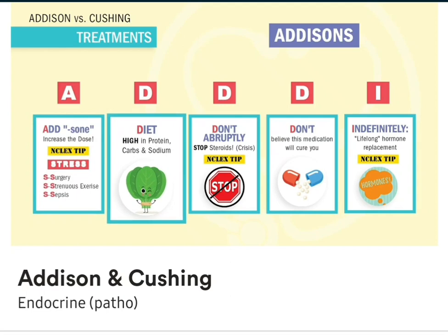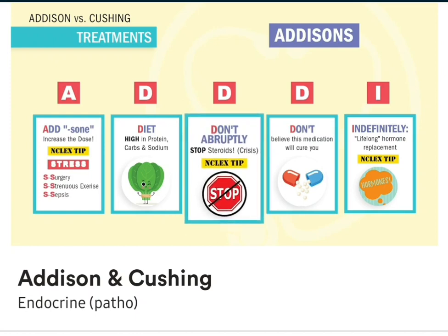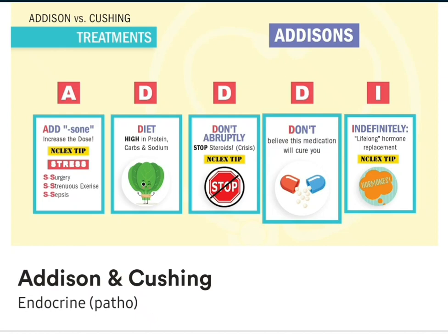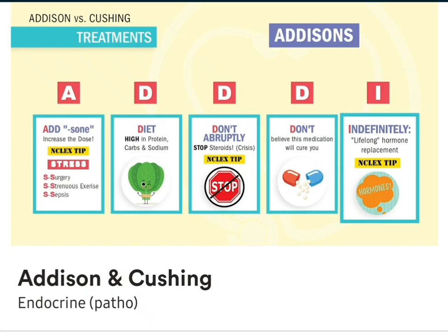D is for a diet high in protein, carbs, and sodium. Cortisol helps convert proteins, carbs, and fat to energy, so keep these high in the diet. Also, don't stop taking steroids abruptly — we never abruptly stop hormones. In this case, it leads to Addisonian crisis, where the BP is so low it can cause death, aka shock. And D — don't believe this medication will cure you. It will not cure you. Always more education is needed for any patients thinking hormones will cure them. I is for indefinitely on this medication — this is a lifelong hormone replacement therapy. No cure. You're always on hormones, what's known as a forever drug. And lastly, we can always wear a medical alert bracelet.